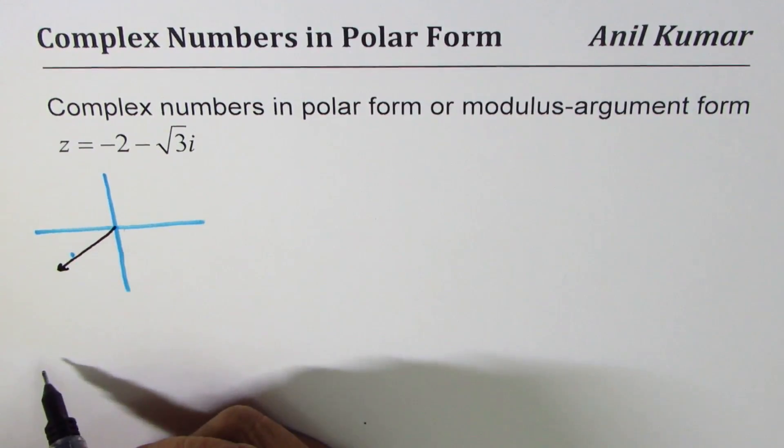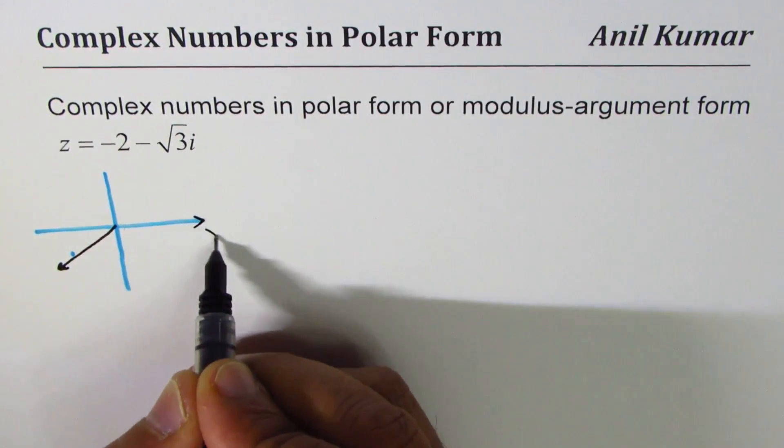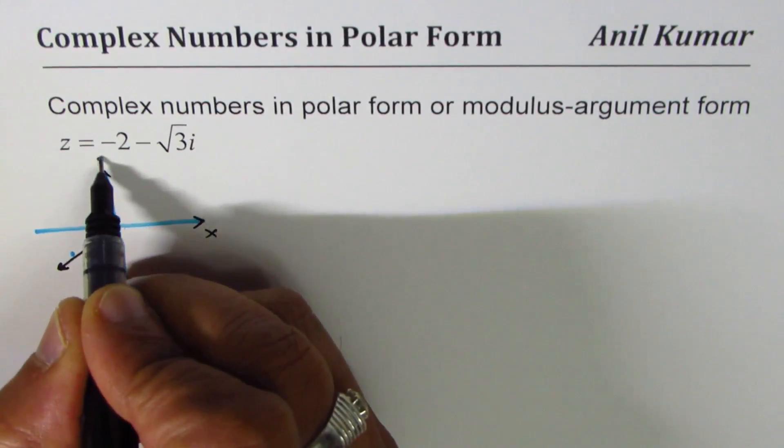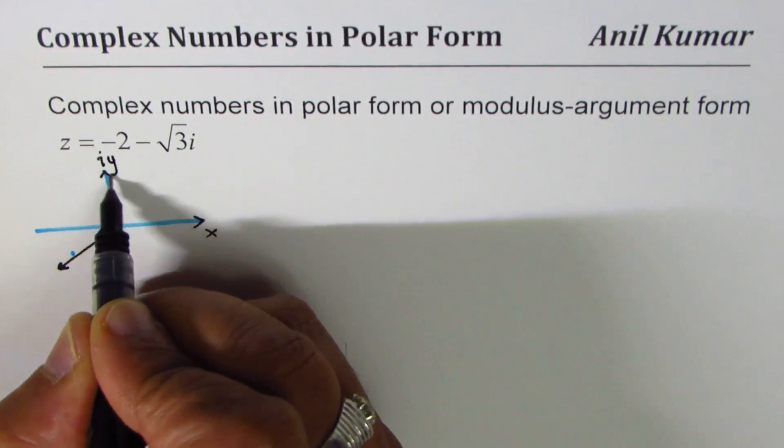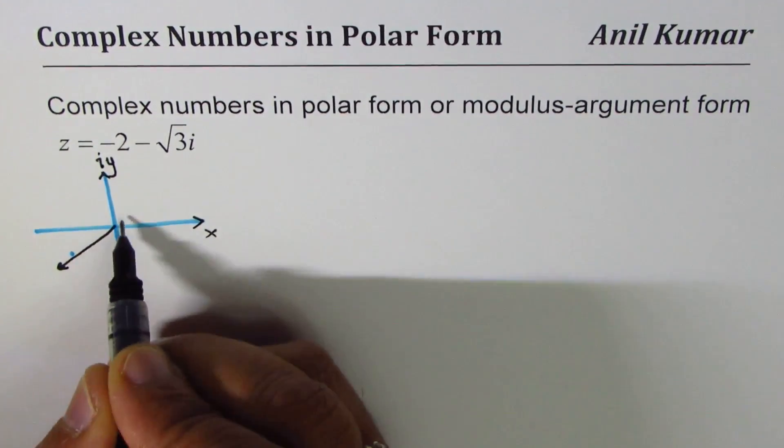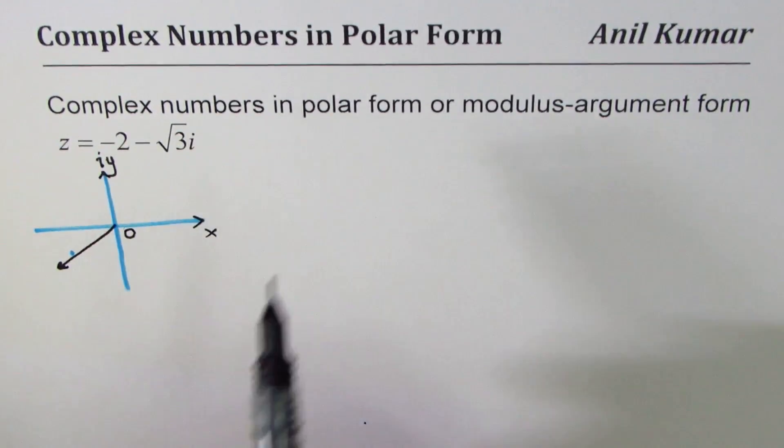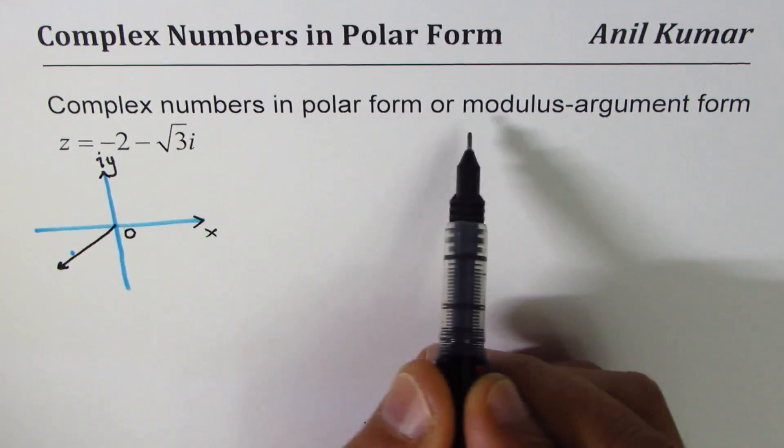Somewhere kind of like this will be our complex number represented, where this is positive real numbers on the polar axis and here we have imaginary numbers.